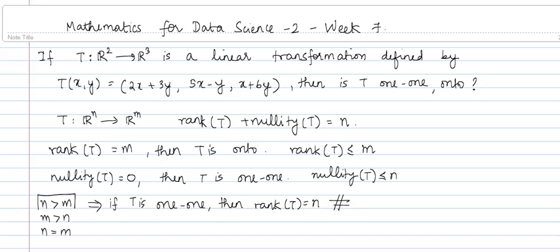In the case when n is greater than m, T cannot be 1-to-1. We also know that rank of T is always less than or equal to m, so rank of T cannot be n because n is greater than m — this is not possible. So whenever the dimension of the domain is greater than the dimension of the codomain, the linear transformation cannot be 1-to-1.